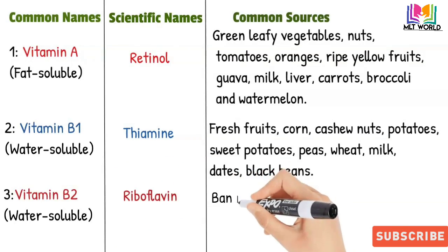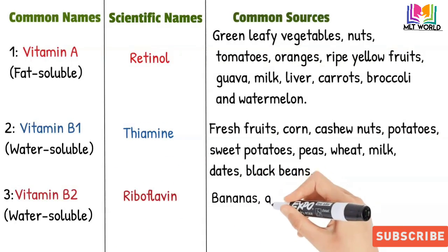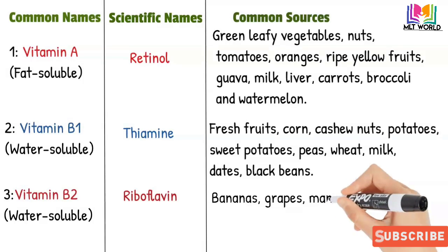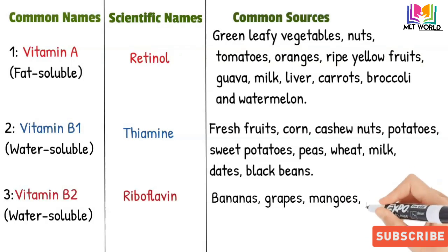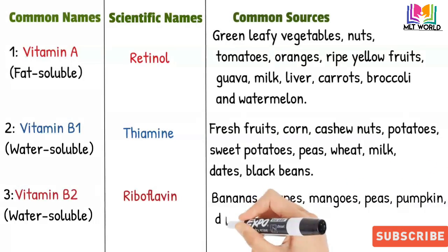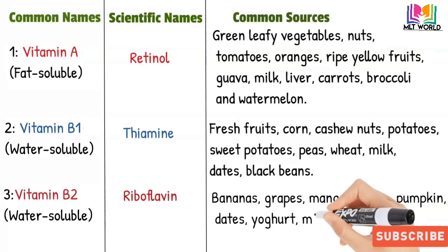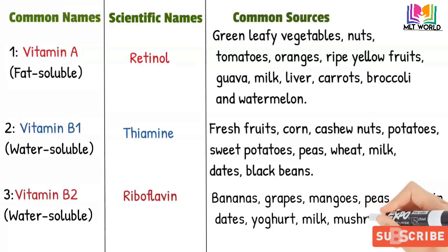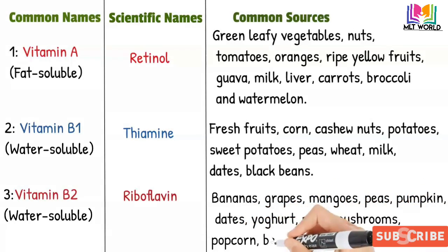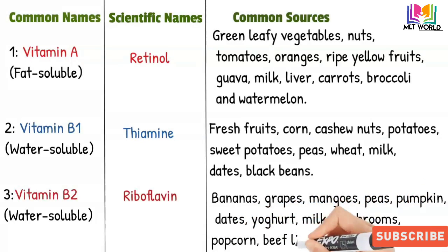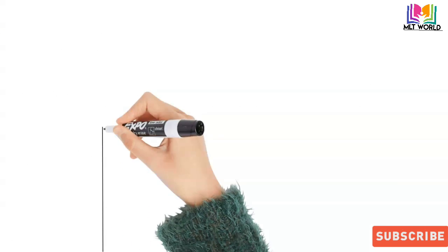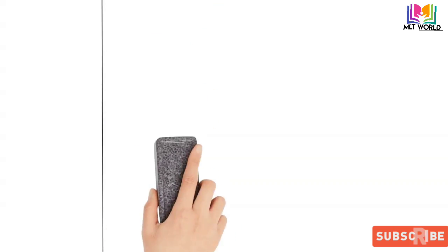The third vitamin is Vitamin B2, which is also water-soluble. Its scientific name is riboflavin. Sources include bananas, grapes, mangoes, peas, pumpkin, dates, yogurt, milk, mushrooms, popcorn, and beef liver.